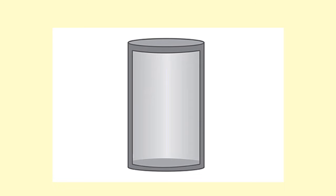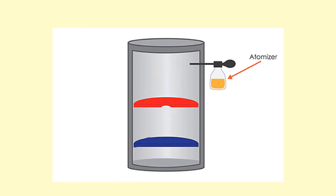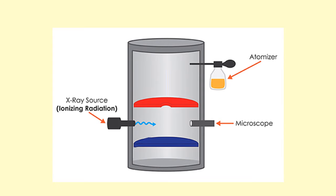We're going to talk about Millikan's oil drop experiment. Firstly we have a container, and there's an atomizer which has oil inside it — we know the density of this oil. We have plates which we'll charge later on. We can use a microscope to look at what's going on inside, along with a scale to measure speed using distance. There's also a source of ionizing radiation to ionize and make charged particles inside the container by knocking out electrons.